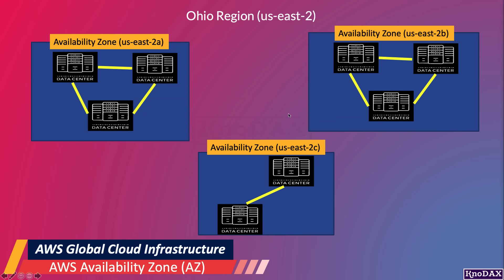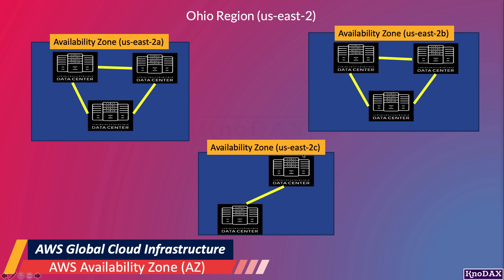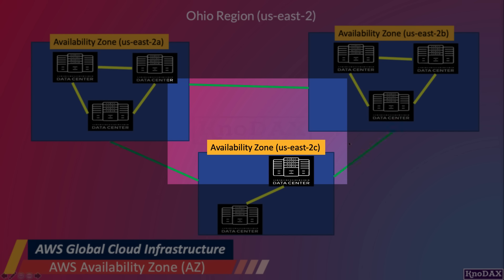As you can see in this example, the AWS Ohio region has three AWS Availability Zones. Each Availability Zone, like an AWS Region, has a code associated with it. Another important point is that Availability Zones within an AWS region are connected with the AWS Private Network.